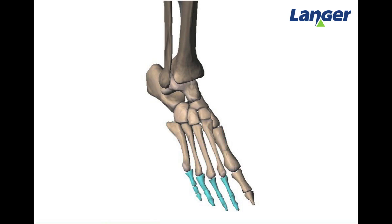Each phalange consists of three bones: proximal phalanx, middle phalanx, and distal phalanx.